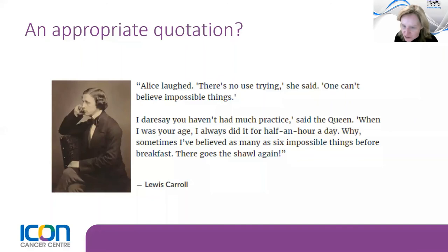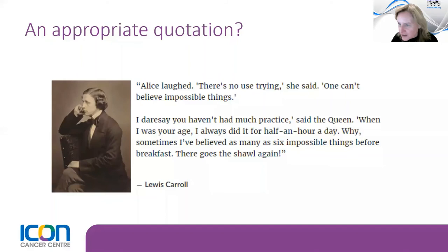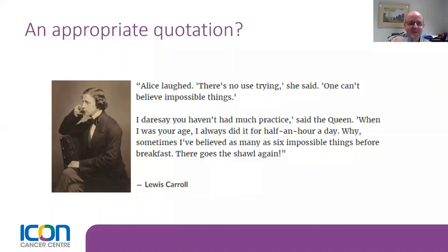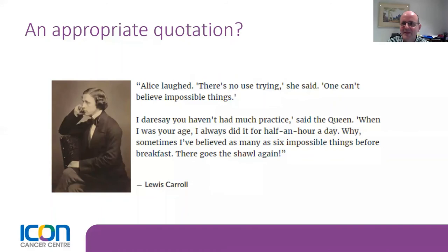How do you calculate setup margin for a single fraction treatment? Would you still use van Herk's formula that considers systematic and random errors, when in this case every error will be systematic? No, you don't use van Herk because it's not designed for single fraction. Different people use different approaches. In an earlier version of this talk I used the root mean square of all my uncertainties, but there are other approaches in the literature.